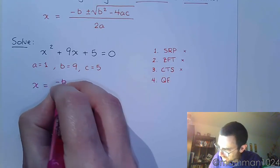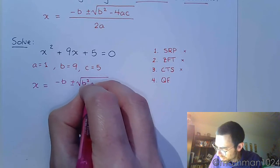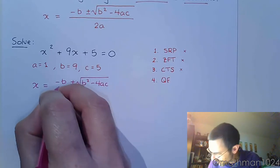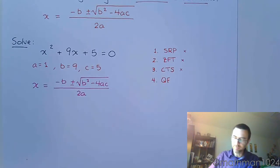x equals negative b plus or minus the square root of b² minus 4ac. That's right, good job! All over 2a. Alright, let's see what happens here.